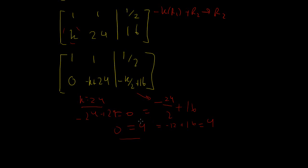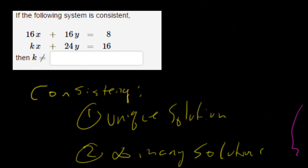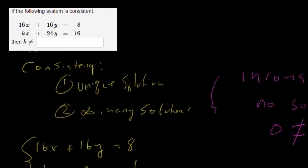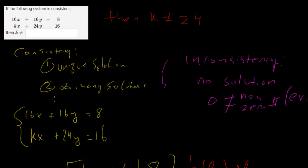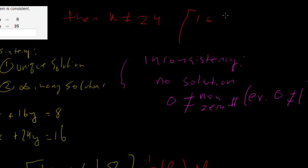So for this following system to be inconsistent, 0 cannot equal to 4. But for this following system to be consistent, K cannot equal to 24. This is your answer. The question asked, if the following system is consistent, then K cannot equal to what? K cannot equal to 24. You could try for yourself: if you put 24x plus 24y and do the whole system equation, if you do another matrix with 16, 16, 8 and 24, 24, 16, you'll find out later on that you'll receive an inconsistent system.